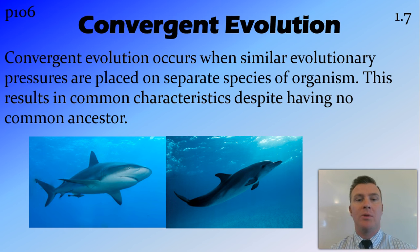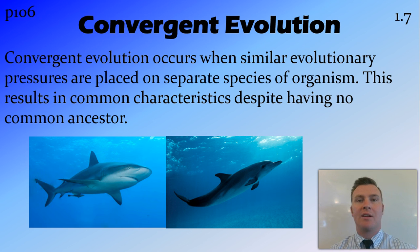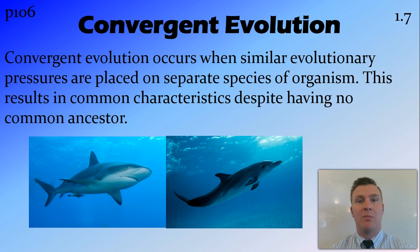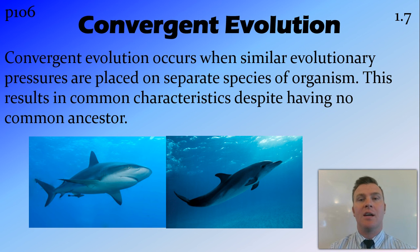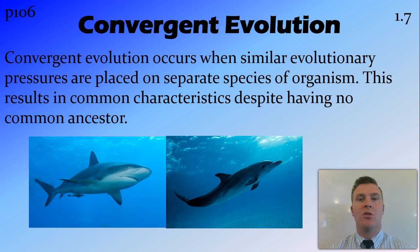Convergent evolution is the opposite — there is no common ancestor; there are different ancestors. However, because the environments are the same, evolution occurs so that common characteristics appear across different species. An example of this would be sharks and dolphins. Both have a streamlined body, both have fins or flippers as well as a dorsal fin. The difference is that a shark is a cartilaginous fish while a dolphin is a mammal, so these two animals had no common ancestor but evolved to look very similar.